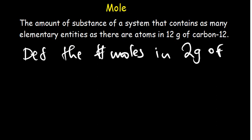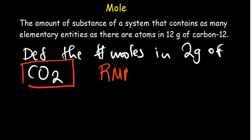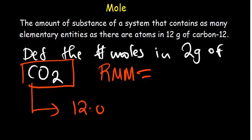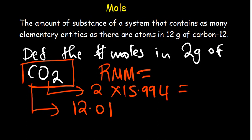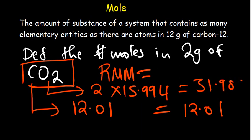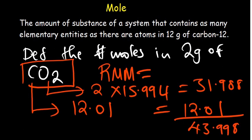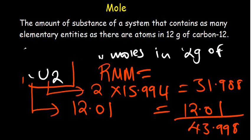For example: determine the number of moles in 2 grams of carbon dioxide. Carbon dioxide is a molecule, so we determine the relative molecular mass by adding its components. Carbon has a molar mass of 12.01 and there is only a single carbon in CO₂. We also have two oxygen atoms, each with a mass of 15.994. So 15.994 times 2 gives 31.988, plus 12.01 gives a relative molecular mass of approximately 43.998 grams per mole.